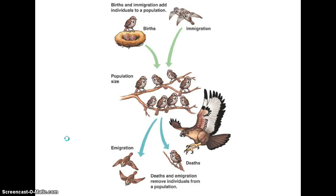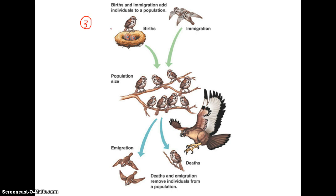This slide represents the third factor we use to describe populations, which is what the rest of this lesson focuses on: population growth rate. We use distribution, density, and population growth rate. Within population growth, there are certain things that affect the growth rate of a population, and this slide does a good job of showing what those various things are.